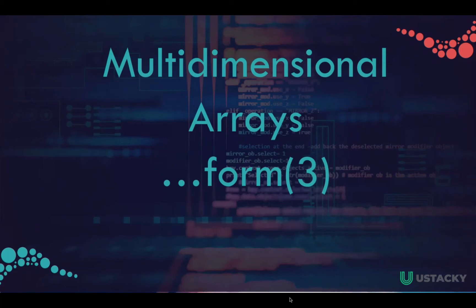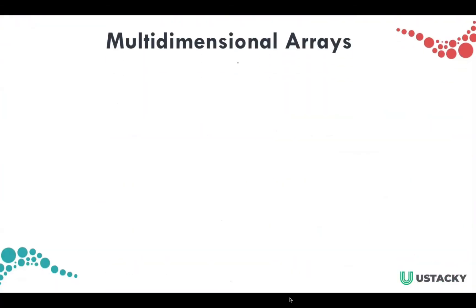In this tutorial I'll be talking about the third form of multidimensional array. In this case we have the parent to be an index array and the child is an associative array.